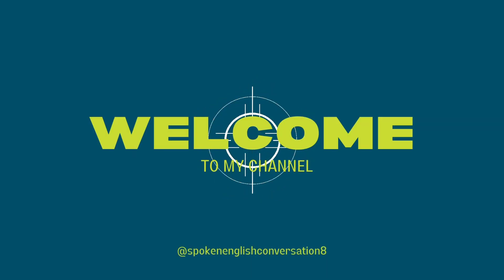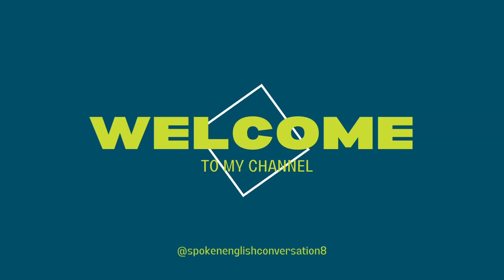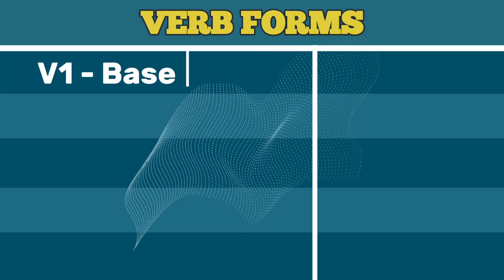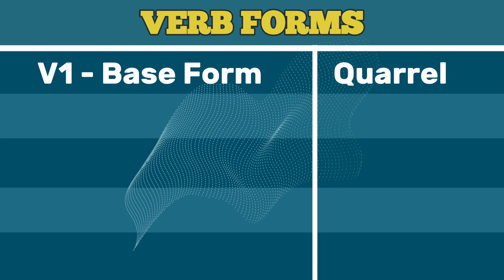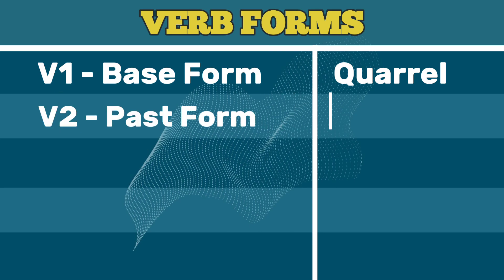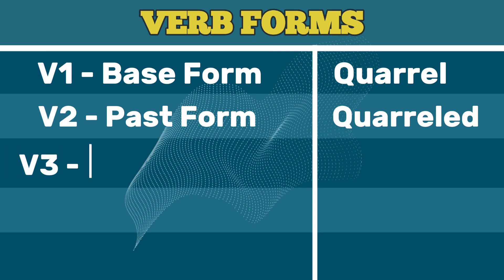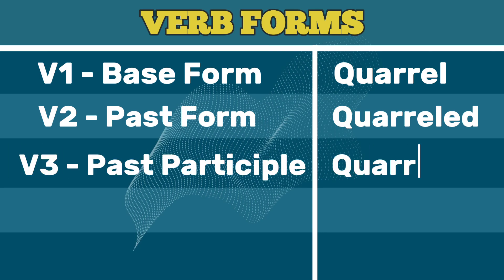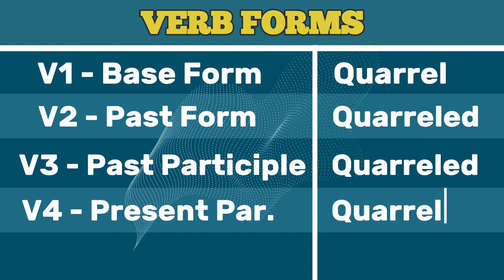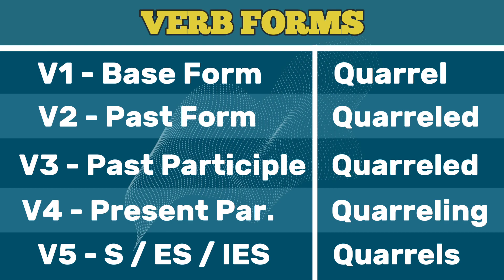Spoken English conversation. Subscribe please. V1 base form: quarrel. V2 past form: quarreled. V3 past participle: quarreled. V4 present participle: quarreling. V5 third person singular: quarrels.